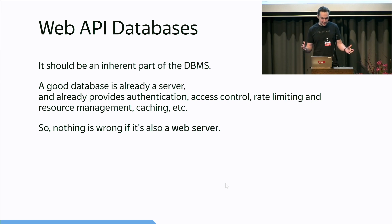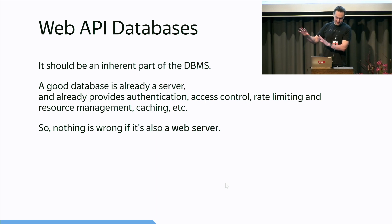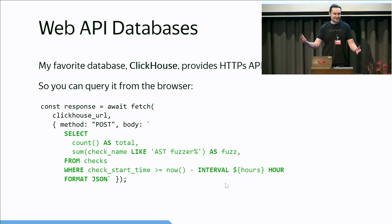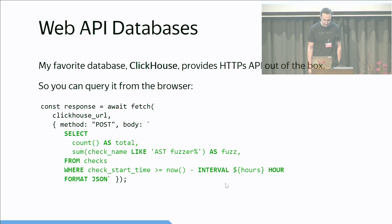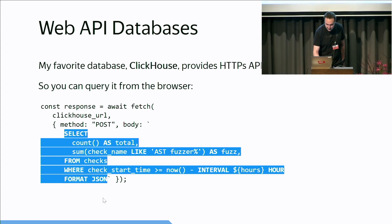A good database, if it is not a flat-file database, is already a server. It already provides authentication, access control, rate limiting, caching. So there should be nothing wrong with making a database server also a web server. My favorite database does it — it provides HTTP and HTTPS API out of the box. So you can query it from the browser, from JavaScript, using a fetch function with a query as simple as this.